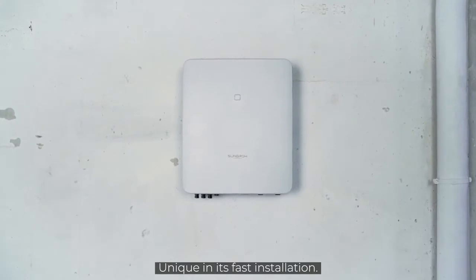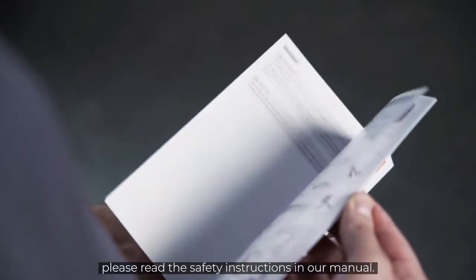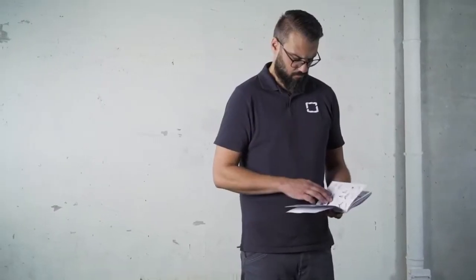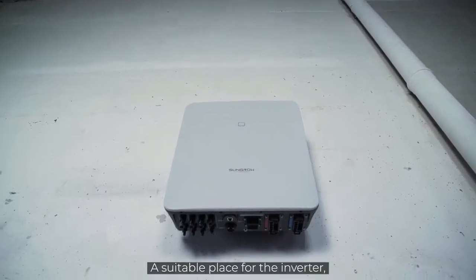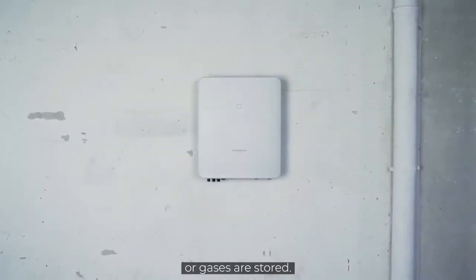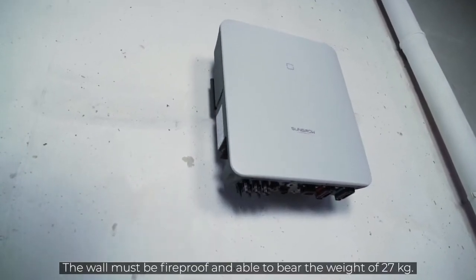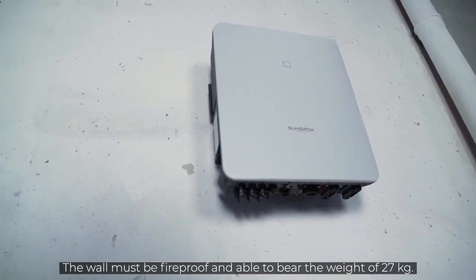Unique in its fast installation. Before starting the installation, please read the safety instructions in our manual. You need a suitable place for the inverter. This means it should be a room where no flammable materials or gases are stored. The wall must be fireproof and able to bear the weight of 27 kg.